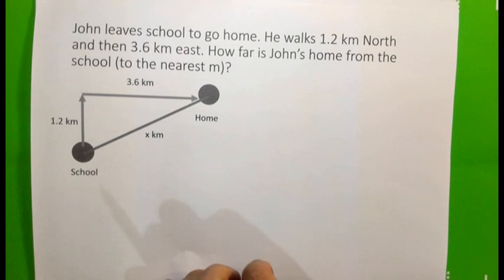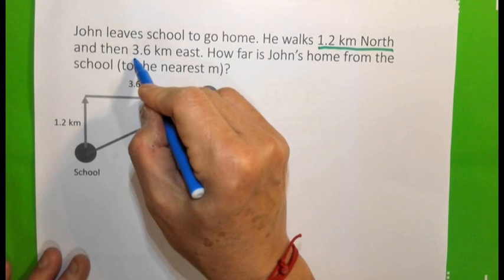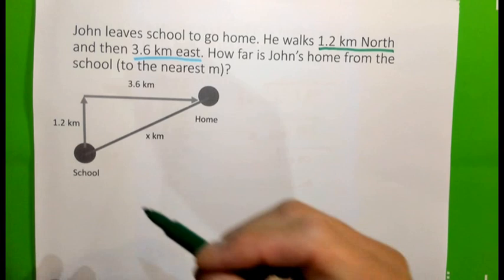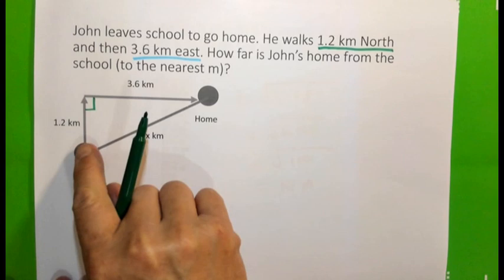Next question. John leaves school to go home. He walks 1.2 kilometres north and then 3.6 kilometres east. How far is John's home from the school to the nearest metre? We know that travelling north and then east, this is actually a right angle. Therefore, again, this is a Pythagoras' theorem problem.